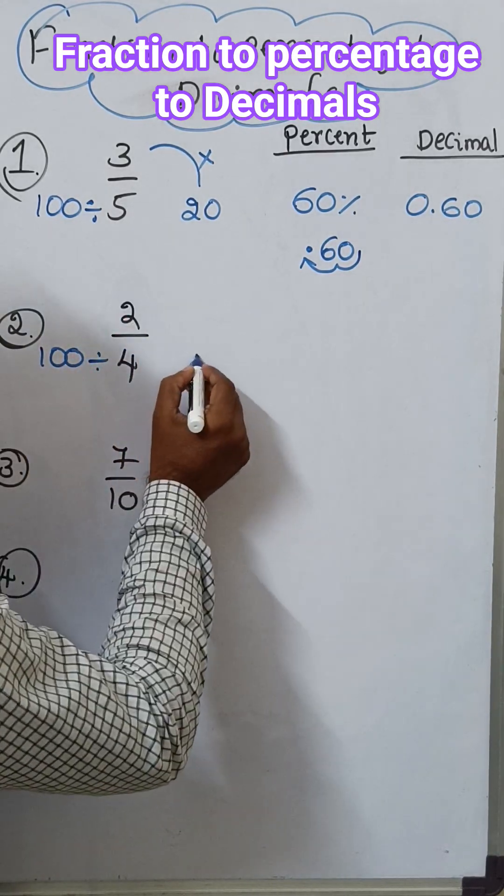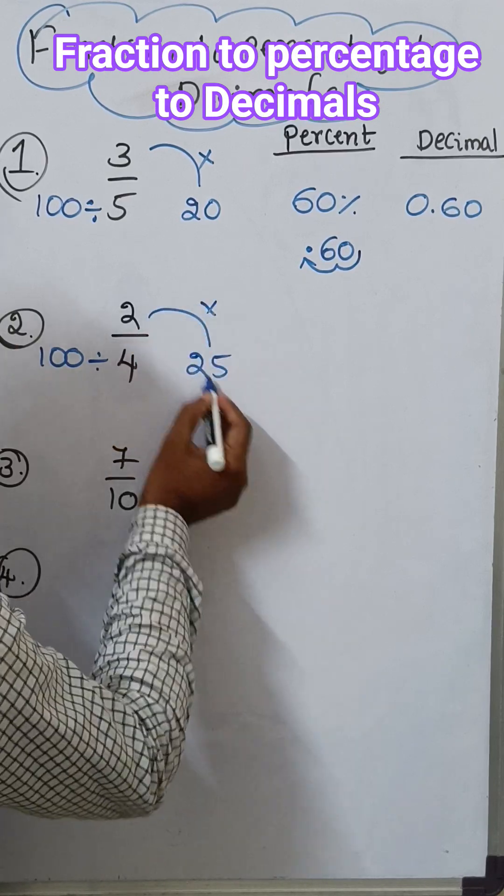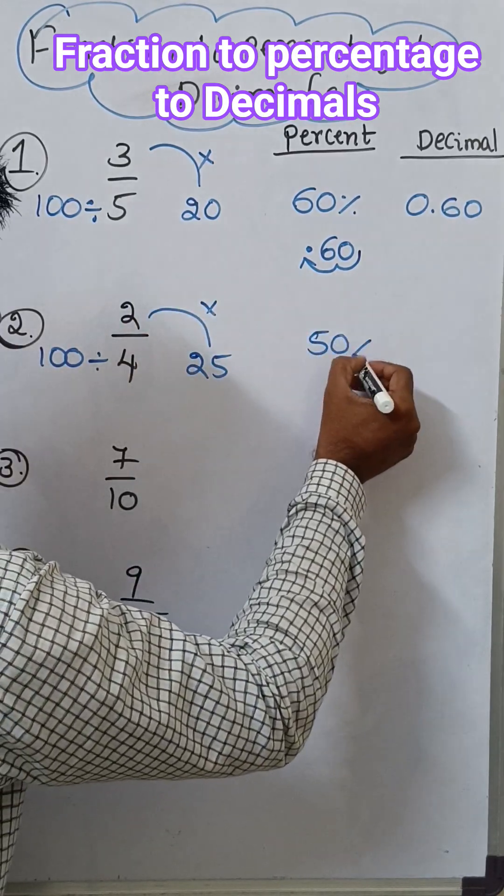Multiply these two, 25 times 2 is 50 percent.